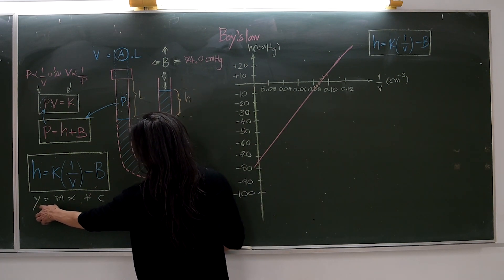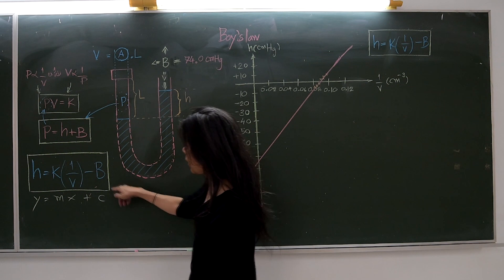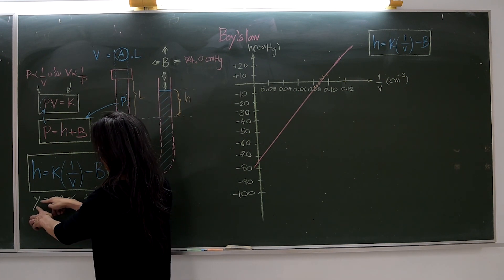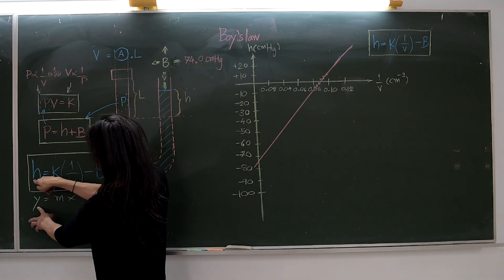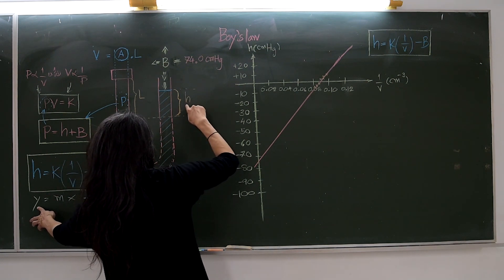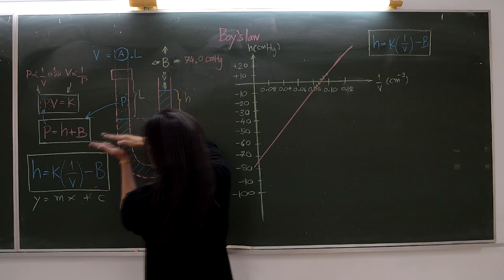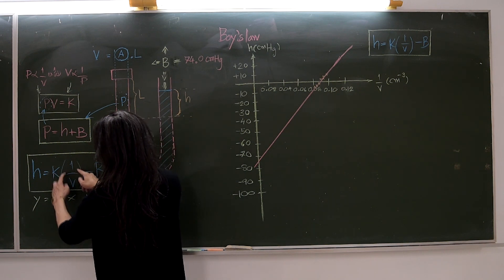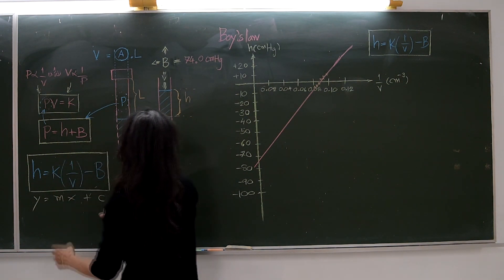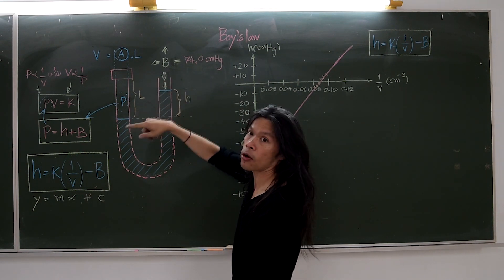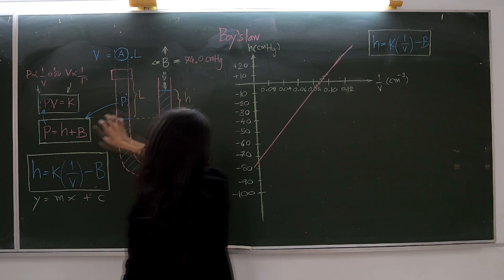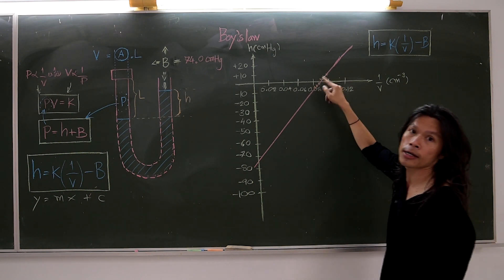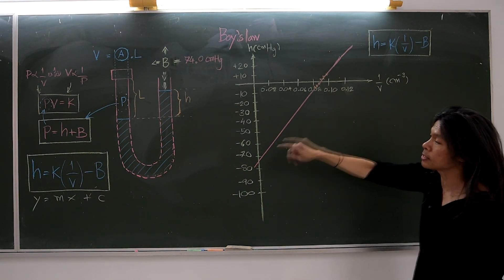This is the straight line equation Y equals M times X plus C. The Y axis is the H value — the difference in mercury levels — which we set in the experiment. The X axis is 1 over V, the inverse of volume. We find the V value, then find 1 over V, to use for graph drawing. After we plot the data, the data points will fall close to a straight line according to the straight line equation.